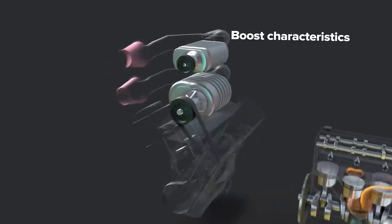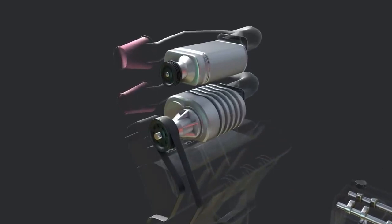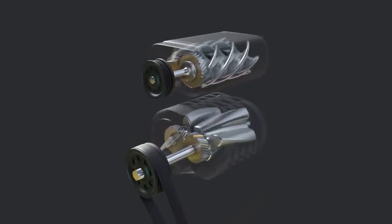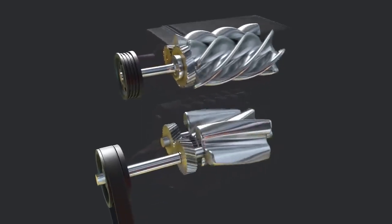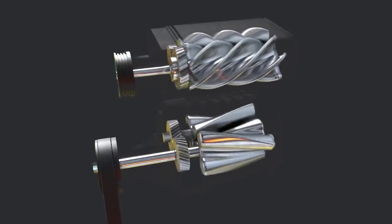Boost characteristics. Roots and twin screw superchargers have positive displacement meaning that they move the same amount of air for each engine revolution regardless of RPM. This also means that they can make boost immediately even at very low RPMs and have a fairly linear power curve.